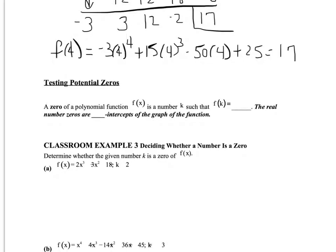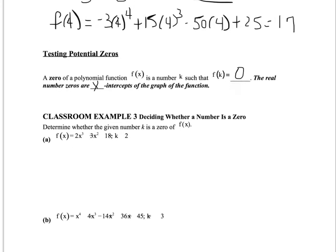Here's another reason synthetic division is very useful. If we use synthetic division and get zero in the remainder spot, that tells us we have found an x-intercept of the graph of the function. Remember: finding a zero is the same as finding a root, which is the same as finding an x-intercept. That's very useful information, especially when we get ready to graph later in this unit.